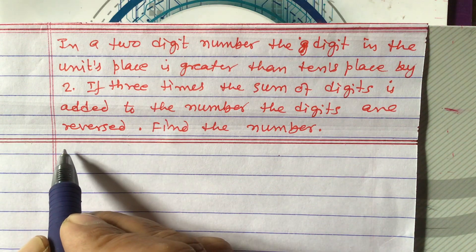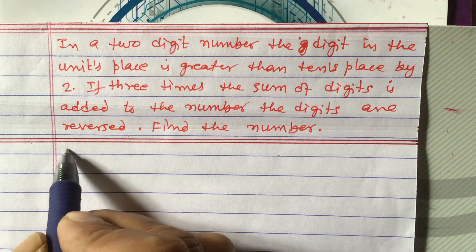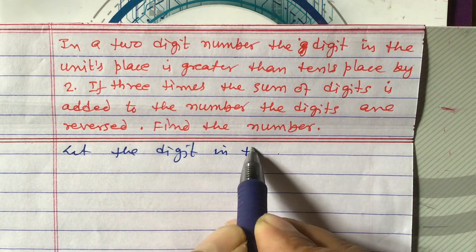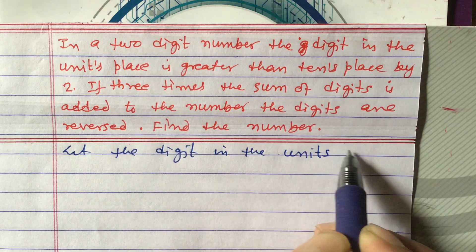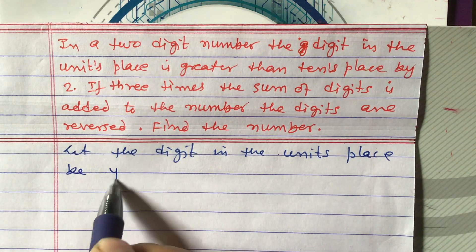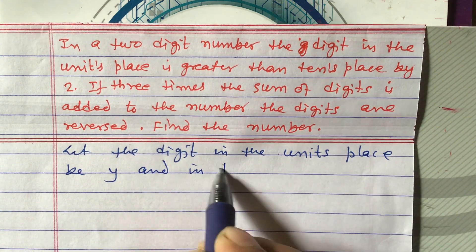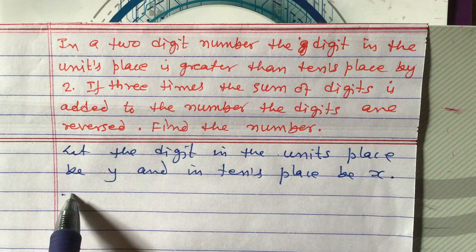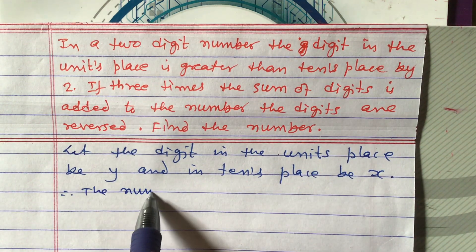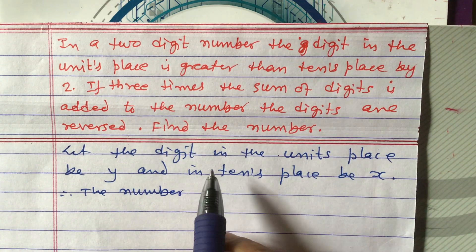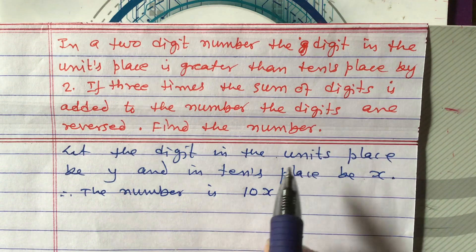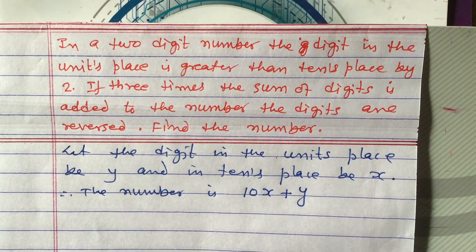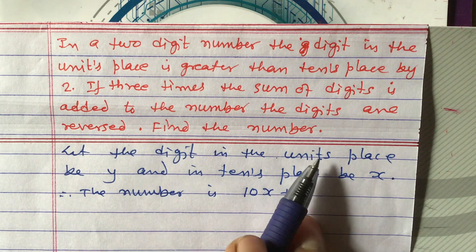Let us consider the digit in the units place be y, and the digit in the tens place be x. Therefore, the number is 10x plus y. Always, if you are asked a question about a two-digit number, you need to write: digit in units place, digit in tens place, and the number — these three lines.